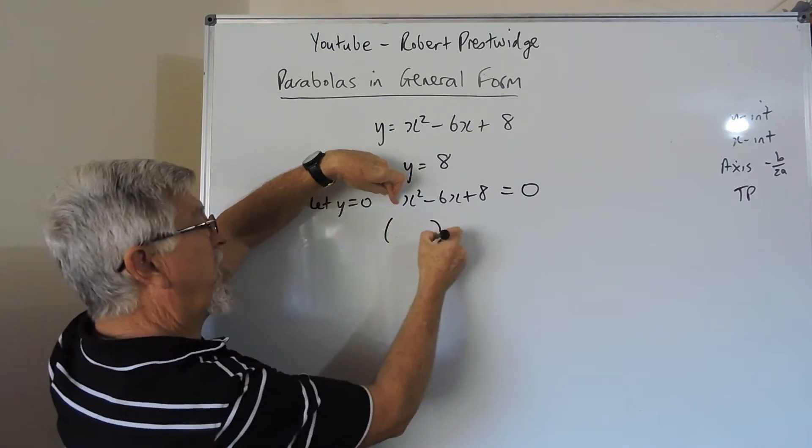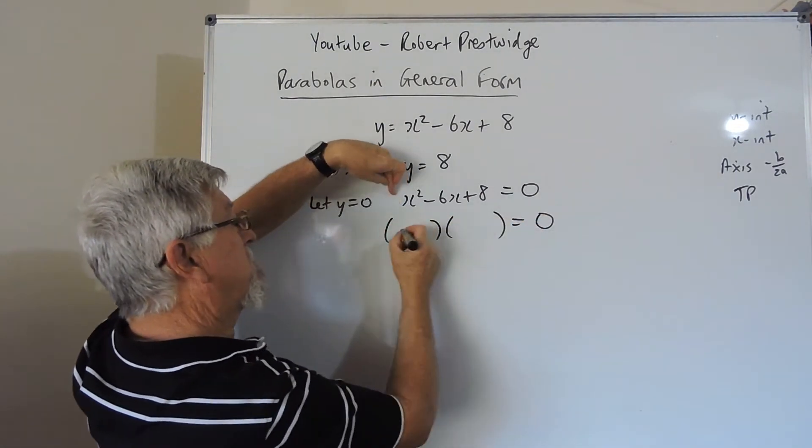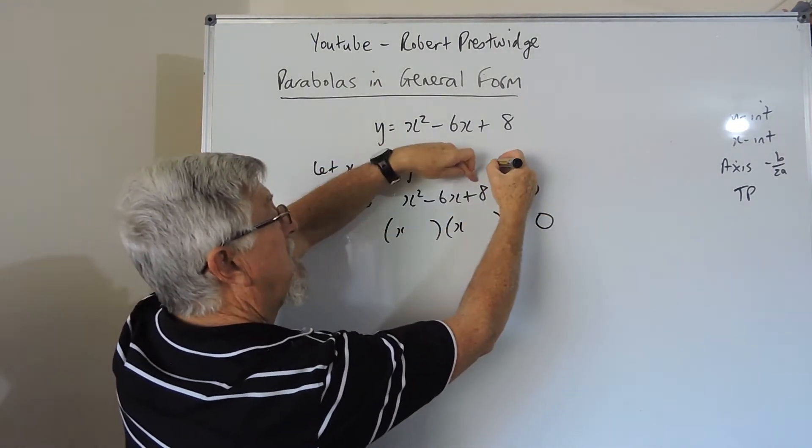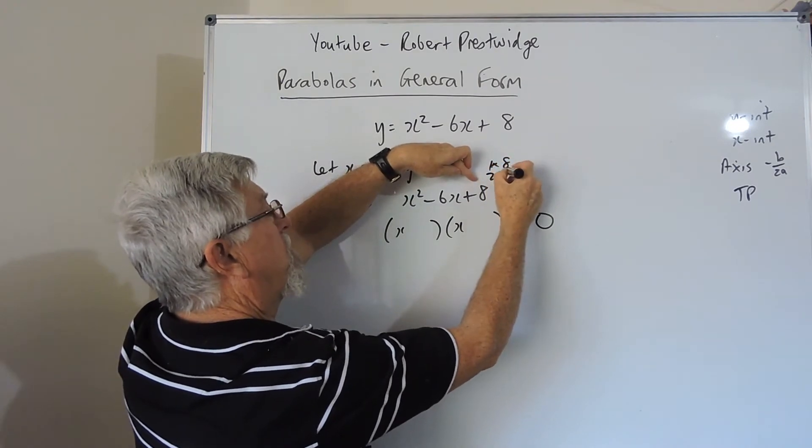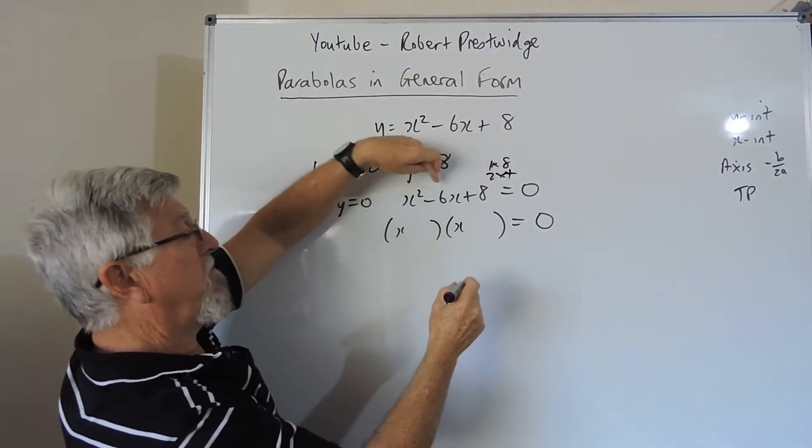Now we factorise into two brackets, this is an x and an x. To get an 8, it could be a 1 and 8, or a 2 and a 4. Same sign, both negative.